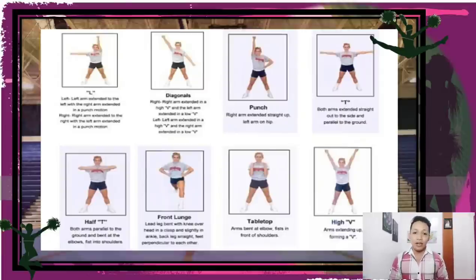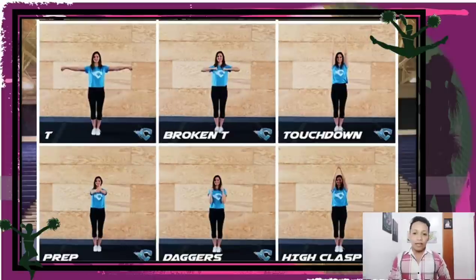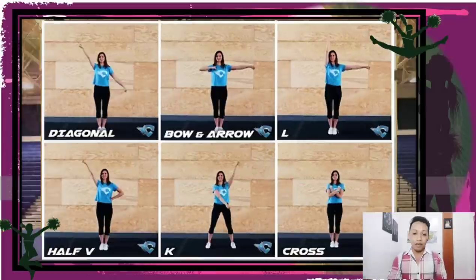For a bigger and clearer view, additional arm position illustrations include: clean, clap, clasp, hips, high V, low V, T, broken T, touchdown, prep, daggers, high clasp, diagonal, bow and arrow, L, half V, K, and cross.